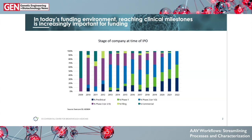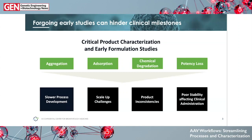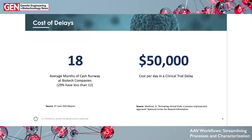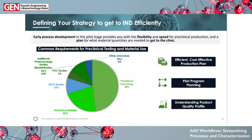One potential unpleasant surprise is an inadequate stability profile of the final drug product, which can manifest as aggregation or adsorption of drug products and loss of titer, as well as chemical degradation. This results in slow process development, scale-up challenges, and product inconsistencies. Health authorities may express concern about dose accuracy in your study and delay the trial. The cost of delay is high — on average, biotech companies have only 18 months of cash runway, with almost a third having only 12, at a cost of about $50,000 per day of clinical trial delay.